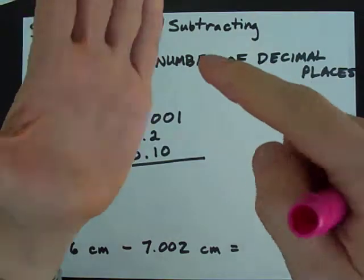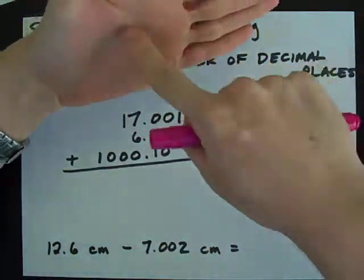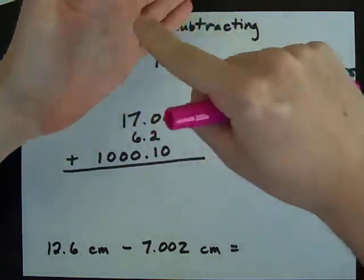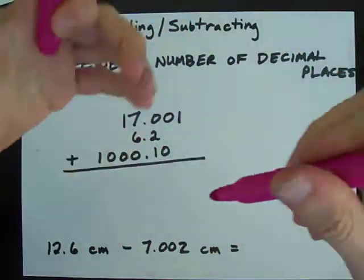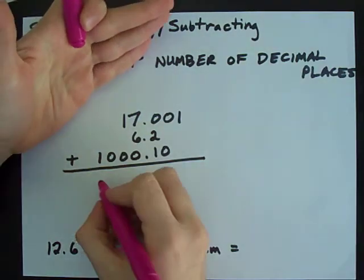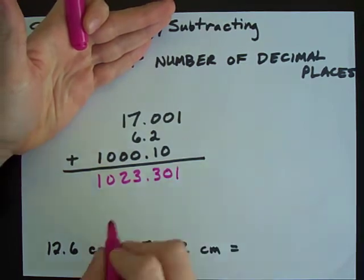So the first thing you do is go to your calculator and type in 17.001 plus 6.2 plus 1000.10. You read your answer and it says 1023.301.